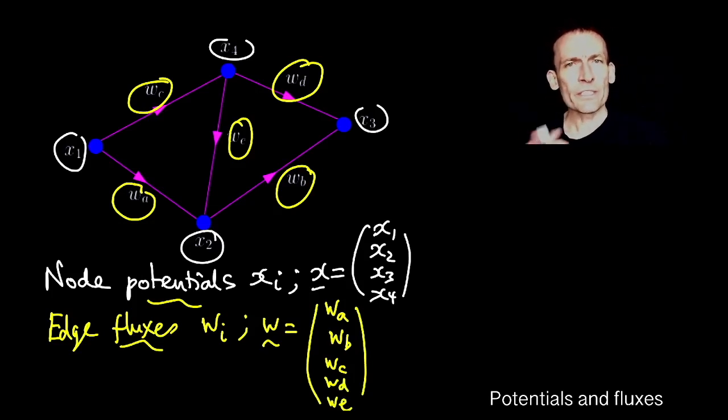So you can see what I've done now. We've been studying the graph abstractly as just things, nodes connected by edges. Now I'm actually going to assign values to the nodes and the edges, and I'm calling them node potentials and edge fluxes. So we've got now a four-dimensional vector x and a five-dimensional vector w.